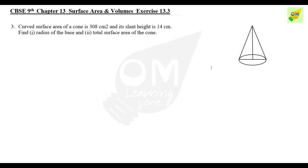Hi students, you can find the 9th standard NCERT CBSE syllabus Chapter 13, Surface Area and Volumes, Exercise 13.3, third sum. The curved surface area of a cone is 308 cm² and its slant height is 14 cm. Find the radius of the base and the total surface area of the cone.